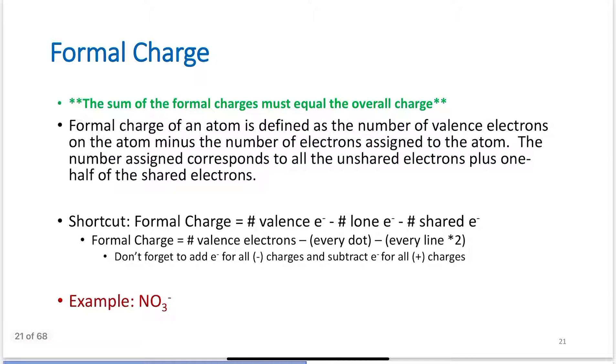Formal charge. The sum of the formal charges must equal the overall charge of the molecule. Formal charge of an atom is defined as the number of valence electrons on the atom minus the number of electrons assigned to the atom. The number assigned corresponds to all the unshared electrons plus one half of the shared electrons.